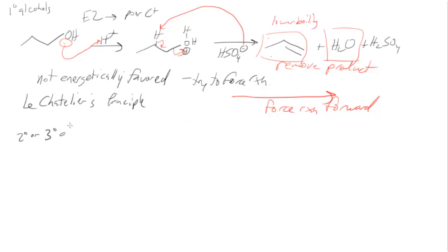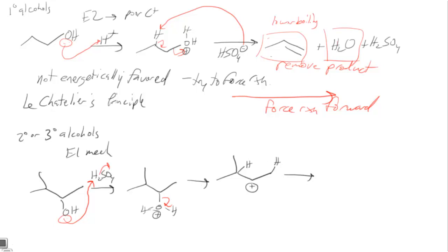If we have secondary or tertiary alcohols, they can follow an E1 mechanism. So the first thing that happens is this hydroxy gets protonated. Then water can leave to form our carbocation. Then we can either remove this proton or this proton to give our two possible products. I'll just show the one removing this one. And this is the major product. This is the most substituted. This would be the minor product.